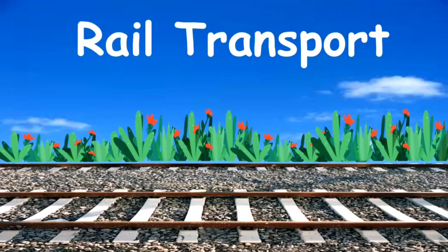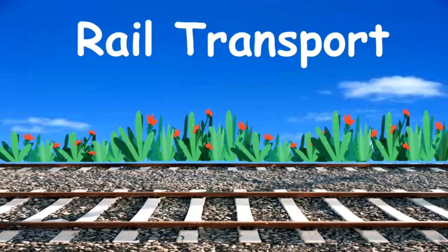Children, let's learn about rail transport. Look at the screen. What can you see? You can see a track. Rail transport needs the track to run — trams, trains, or metro. They can't run on the road; they have to run on the track.